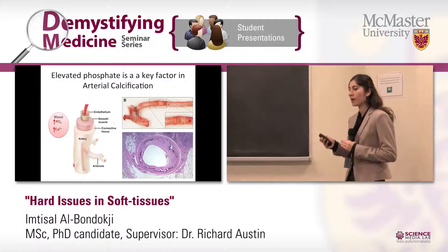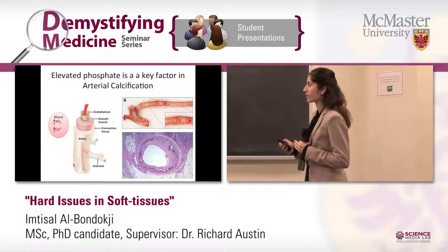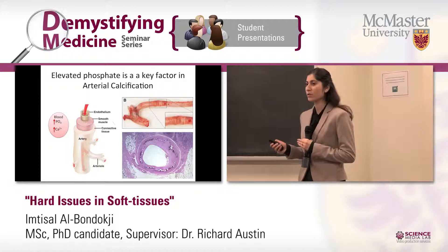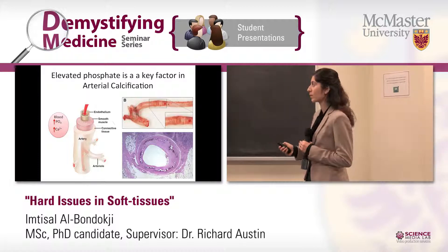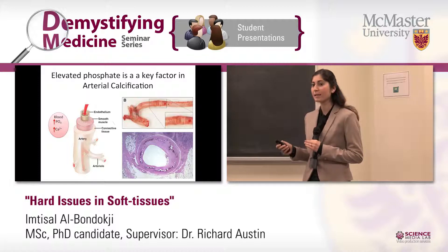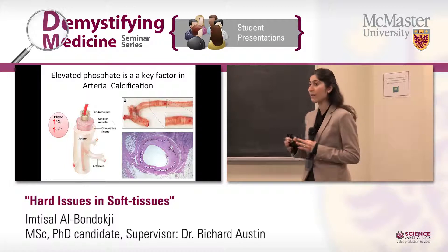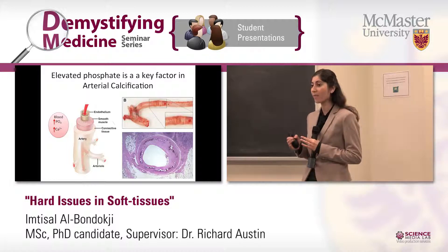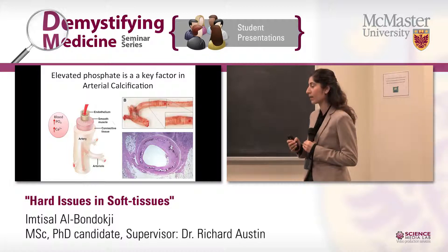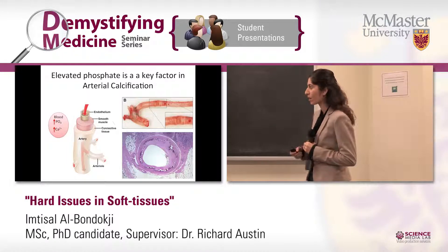Our arteries are made up of three key layers: the connective tissues, the smooth muscle layer, and the endothelium. The smooth muscle layer is the key layer that actually regulates the elasticity of the vessel itself and controls blood flow and blood pressure.